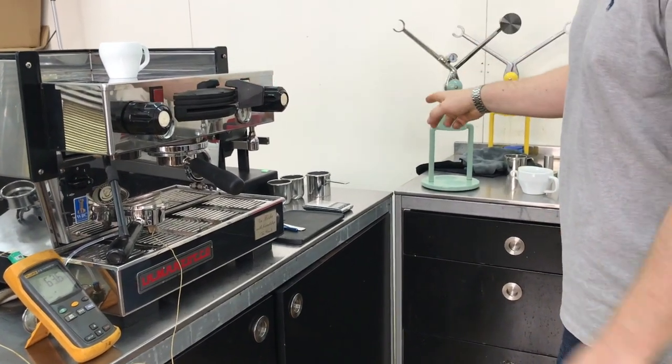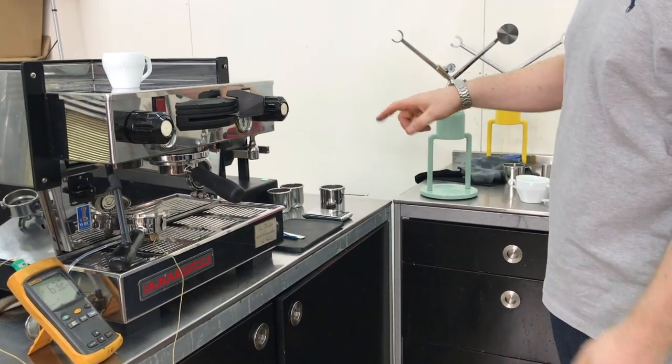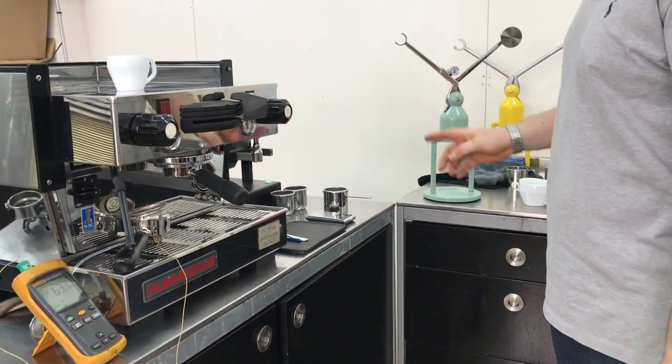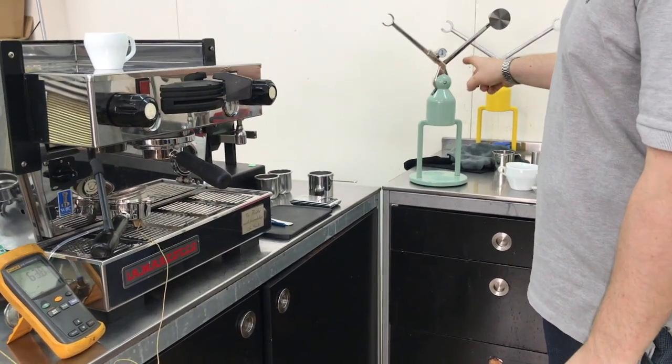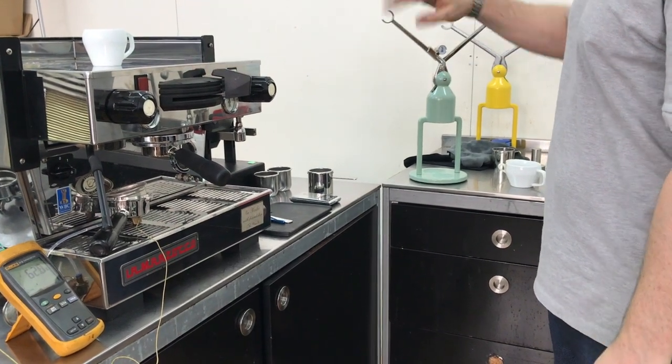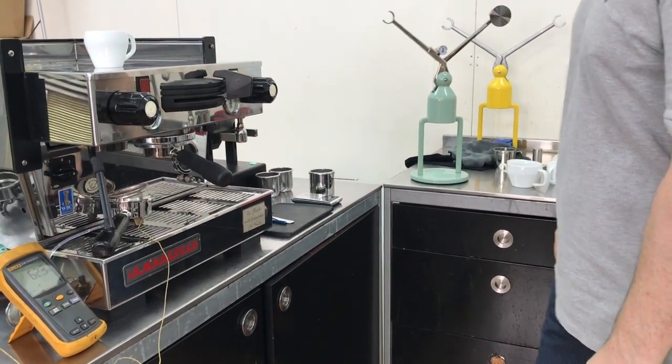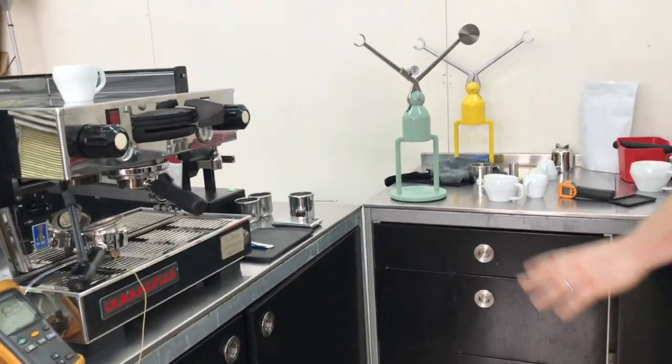We're going to do a quick comparison with the La Marzocco Linea. Someone asked about back-to-back shots, how difficult or easy it is. So we'll do a shot on that, measure the in-cup temperature, and then we'll do two on the robot just to show you how quickly you can do a back-to-back shot.